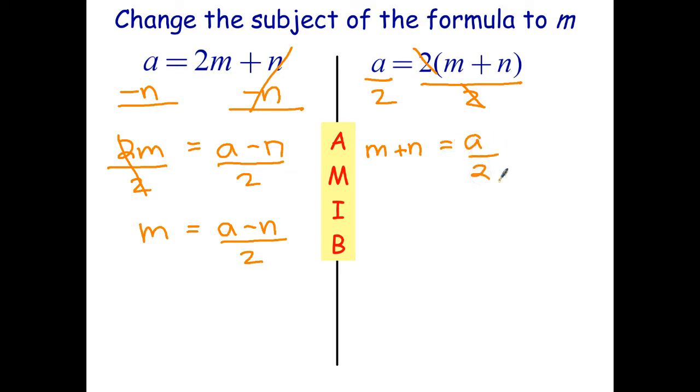And then the last step, subtract n from both sides. I'll just put it a bit lower. Subtract n from both sides. And that leaves me with just the m on the left. And on the right, I've got a over 2 minus n.